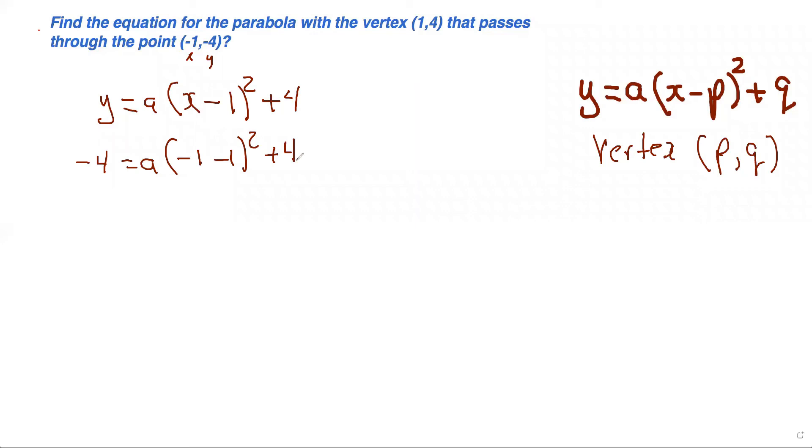Moving the 4 to the other side gives -4 - 4 = a(-2)². Here, -1 - 1 is -2 squared, which gives 4. This becomes -8 = 4a. Dividing both sides by 4 gives a = -2.